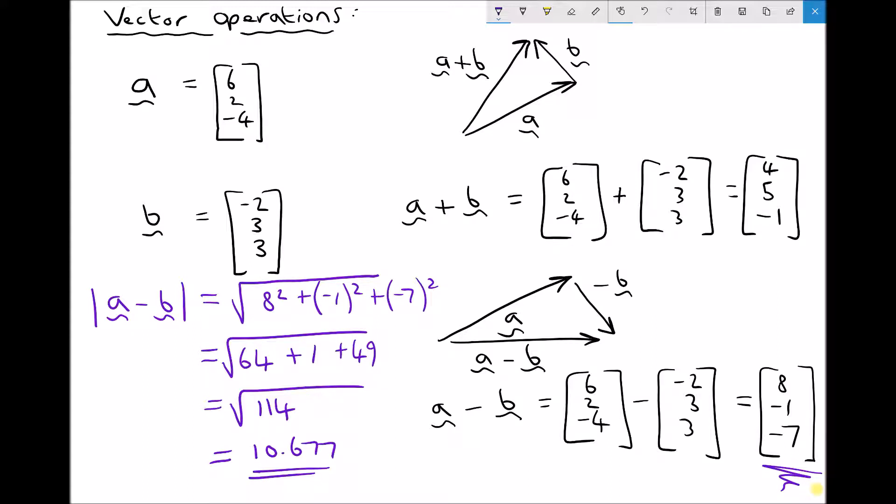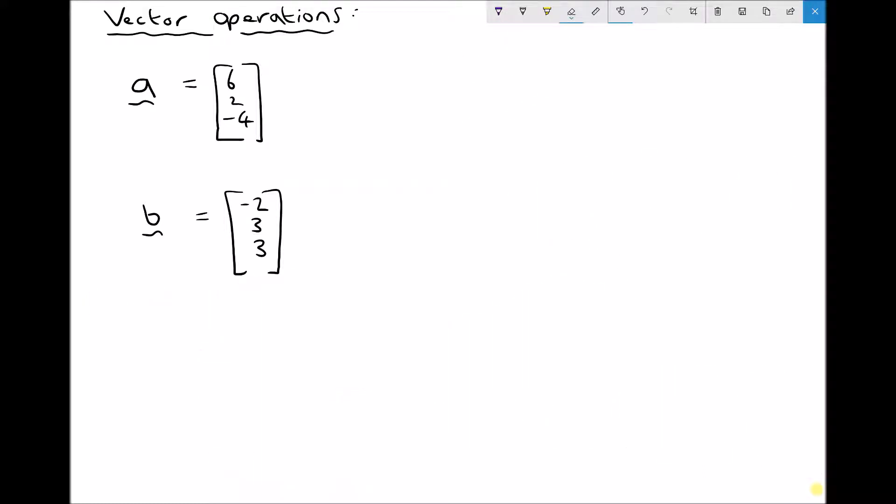Now another operation we can perform is multiplying a vector by a scalar. Now one of the things that we said at the start of this video was that a vector has a magnitude and a direction.